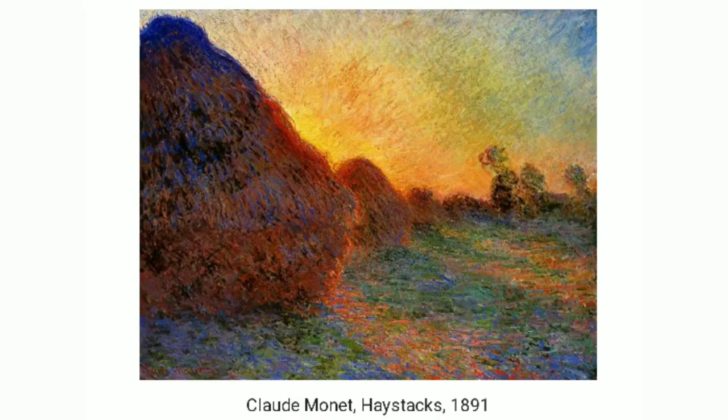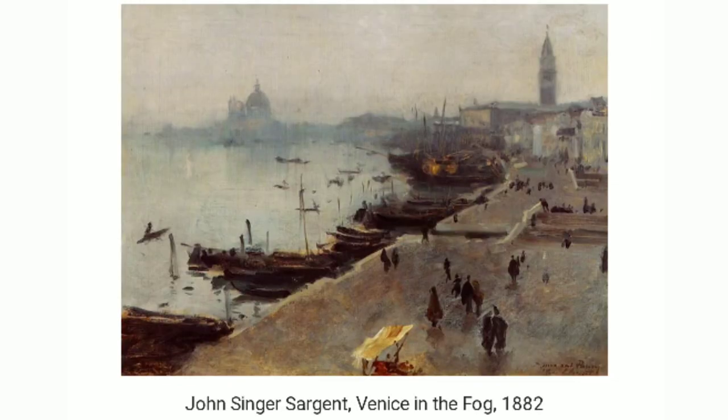In this example we can see hue variances. If we look closely we can see blues, purples, greens, reds, orange, and yellows. You can see these other examples for better understanding.